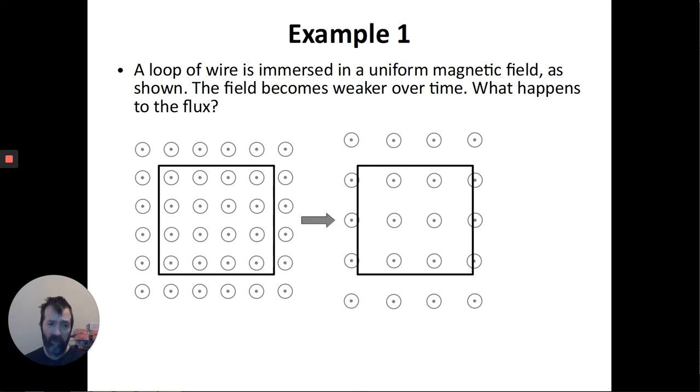So here's a relatively simple example. I have this square wire loop. It's immersed in a magnetic field. You can see that the magnetic field is pointing out of your screen. And it says that the field becomes weaker over time. What happens to the flux? So I've represented the weakening field by spreading the lines out. Again, like I said before, the density of the lines is proportional to the strength of the field.